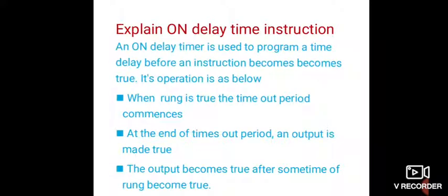Next question: explain the on-delay timer instruction. An on-delay timer instruction is used to program a time delay before an instruction becomes true. When the rung becomes true, the timeout period commences, and at the end of the timeout period an output is made true. For example, if the input becomes true, then after some time the output is to be activated. This instruction is used when we need to include a time delay between the activation of the input and the activation of the output.